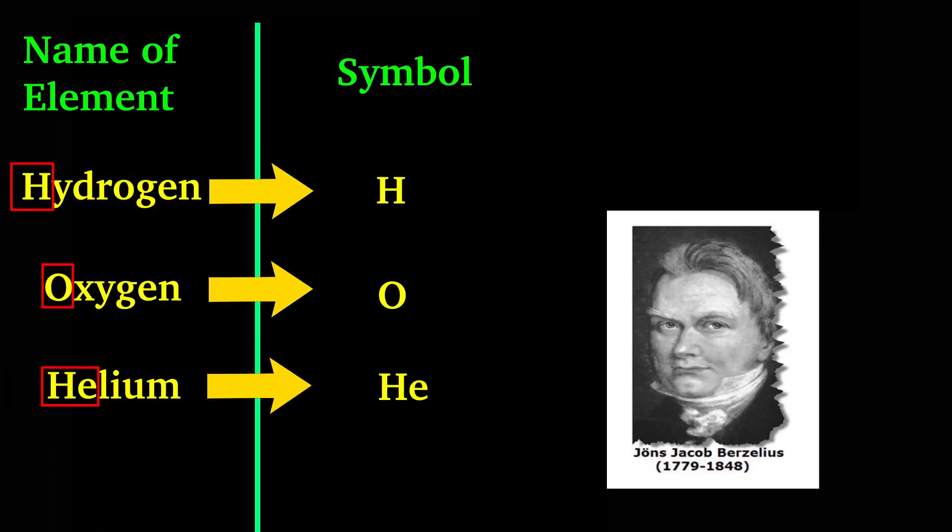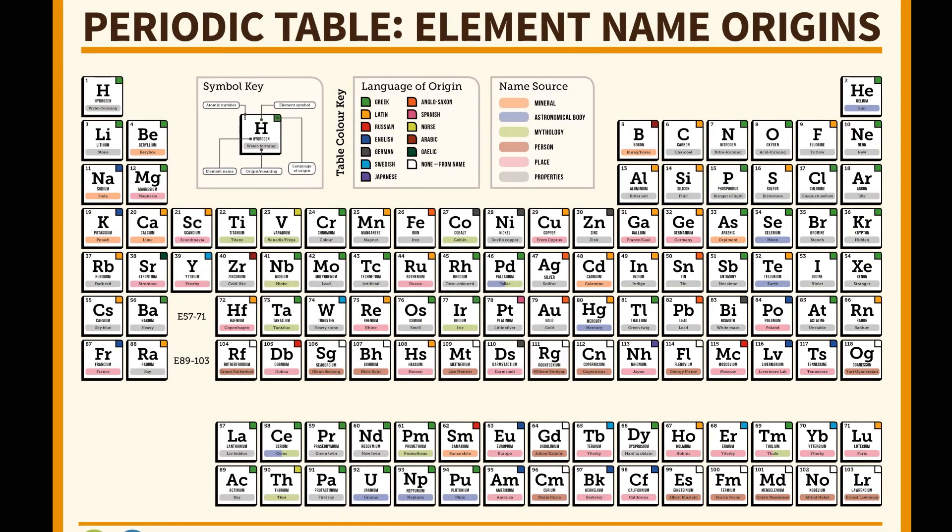Berzelius suggested that the symbols of elements be made from one or two letters from the name of the elements. In today's time, each element is represented by a symbol which is derived from its English or Latin name.